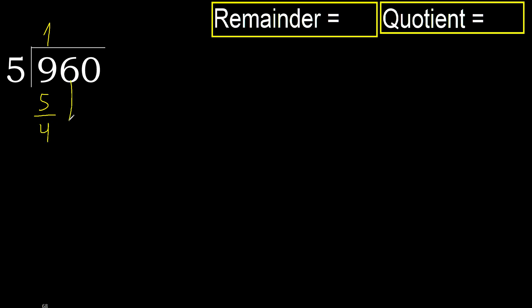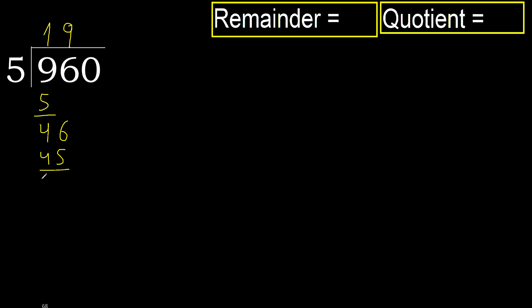Next: 46. 5 multiplied by 9 is 45, which is not greater. OK. Subtract: 46 minus 45 is 1.